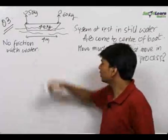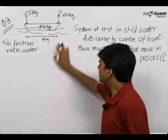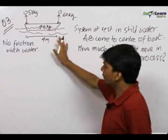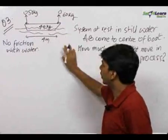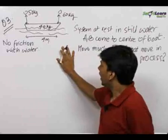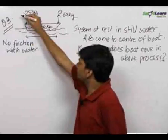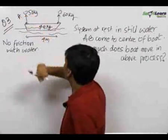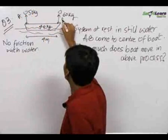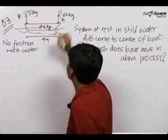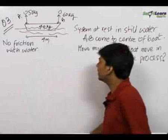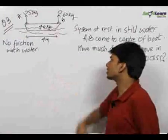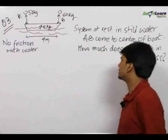In this question there is a boat standing in still water with no friction between the boat and water. Man A of mass 50 kg is standing on one side and man B of mass 60 kg is standing on the other side. The length of the boat is 4 meters and the mass of the boat is 40 kg.